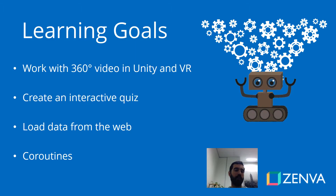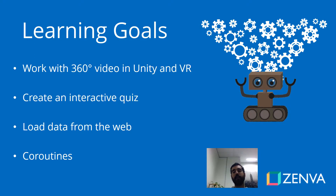Now what about our learning goals? You will learn to work with 360 video in Unity and virtual reality by creating this interactive quiz application that you saw. The data of the quiz is loaded from the web using JSON, so you'll learn about all of that. At the end of the course we'll have a brief discussion about coroutines as well, which is quite important in Unity.